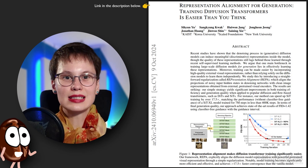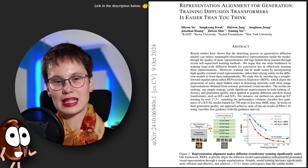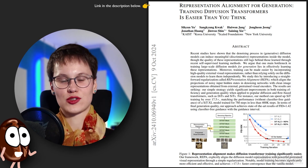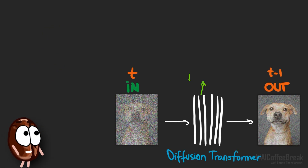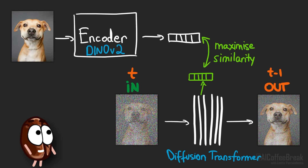The big idea in this paper is simple yet brilliant: why not let diffusion models learn from models like Dinov2 that already have strong abstract representations? This happens simply through a regularization loss term which is added to the reconstruction loss of diffusion models. This new loss term forces the diffusion model to align its representations with the pre-trained abstractions of Dinov2, and this alignment not only accelerates training but also makes diffusion models better at capturing these general-purpose visual representations. It's like giving diffusion models a shortcut to learn faster and smarter by copying the knowledge of a model that has better representations.